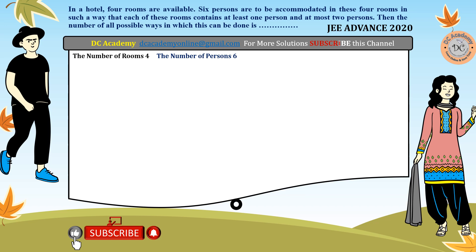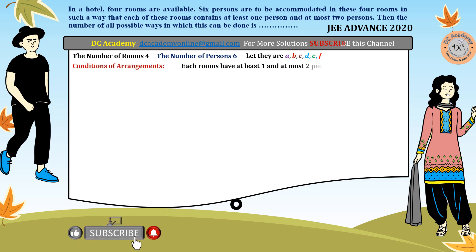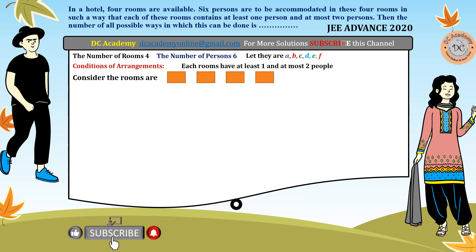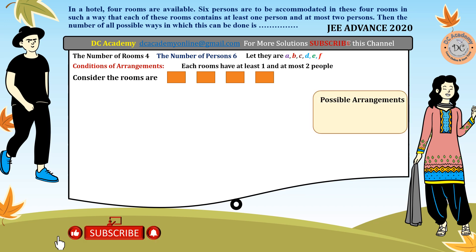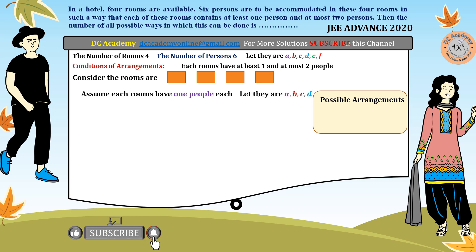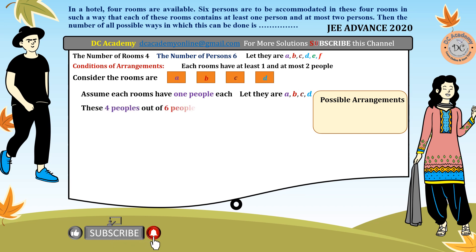The number of rooms is four and the number of persons is six. Let us label the persons as a, b, c, d, e, f arbitrarily. The condition is that each room has at least one and at most two people. We first place one person in each room — any four of the six persons can be chosen for this, which can be done in 6C4 ways.